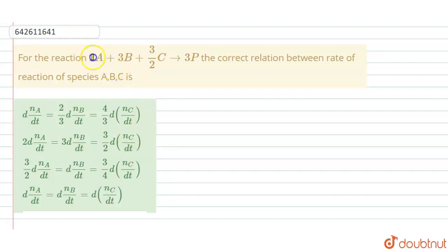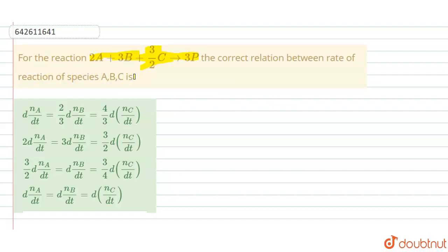Hello students. The question says that for the reaction 2A + 3B + 3/2C converts to 3P. We have to find the correct relation between the rate of reaction of species A, B, and C.